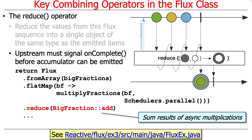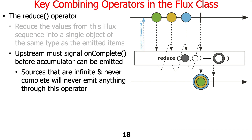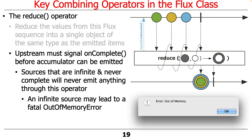A very important thing to remember: the upstream — the thing generating the values being reduced — must ultimately signal on-complete, or nothing will ever be emitted. If you never terminate, you can't get a final reduction. This particular simple example takes elements in an array, multiplies them using the flat map concurrency idiom, then adds them all together. If you have an input source that is infinite and never completes, nothing will ever be emitted, and you will most likely get an out-of-memory error because you never converged or terminated.